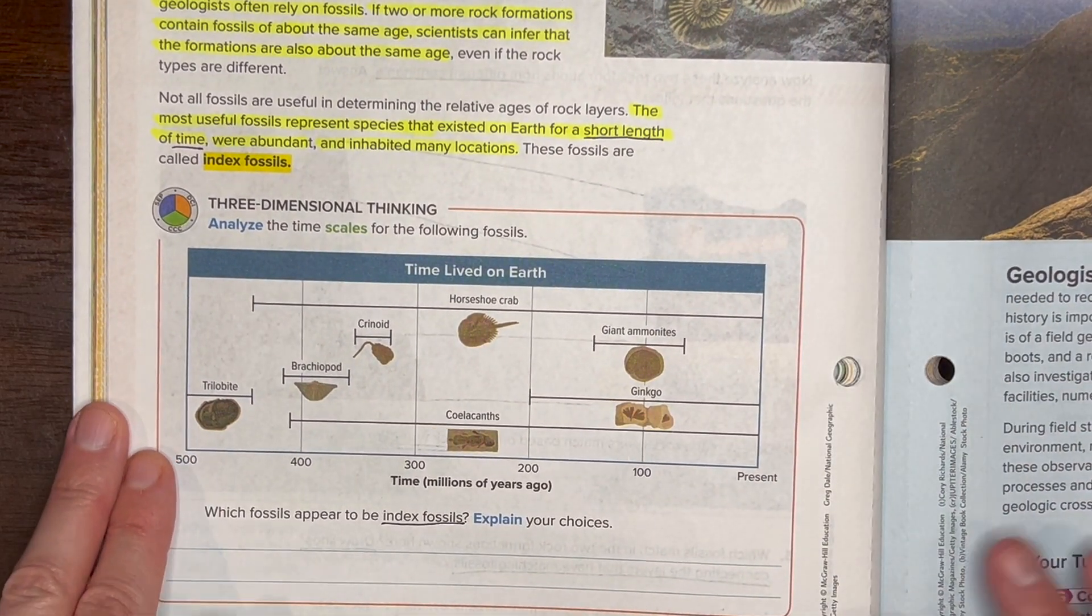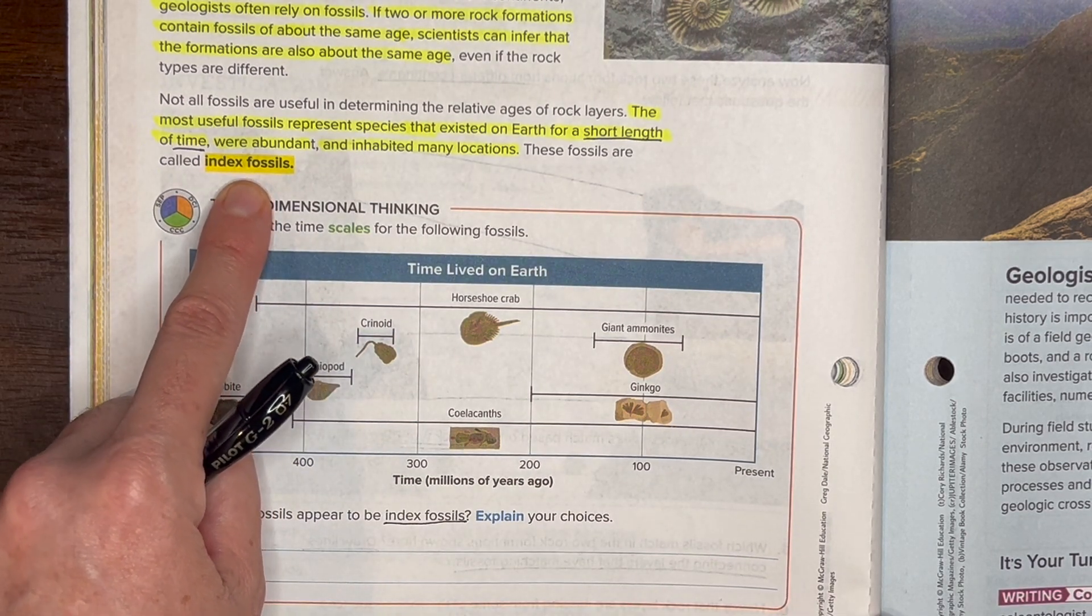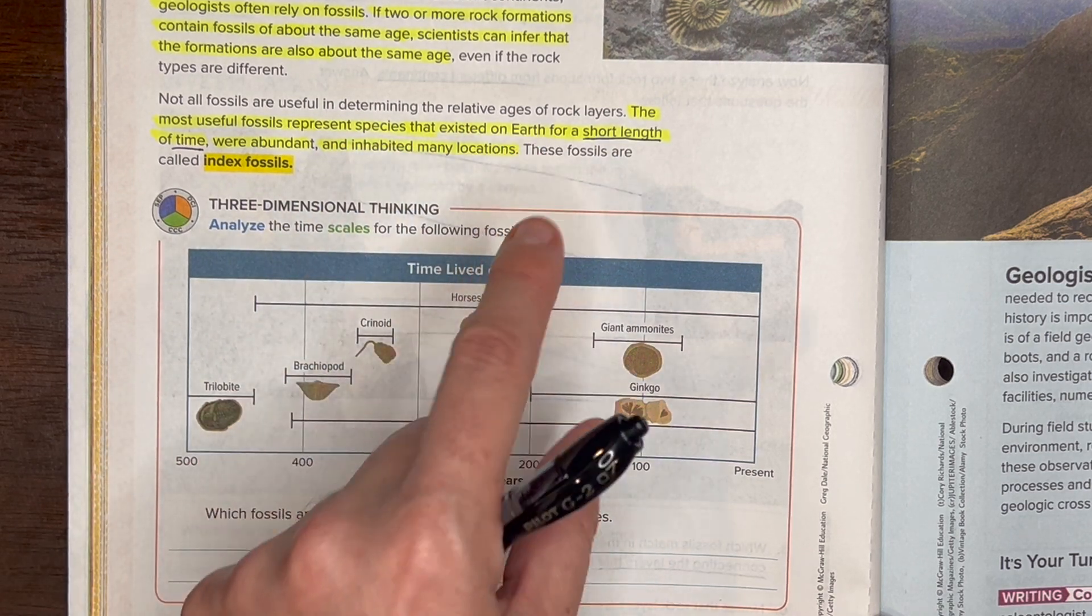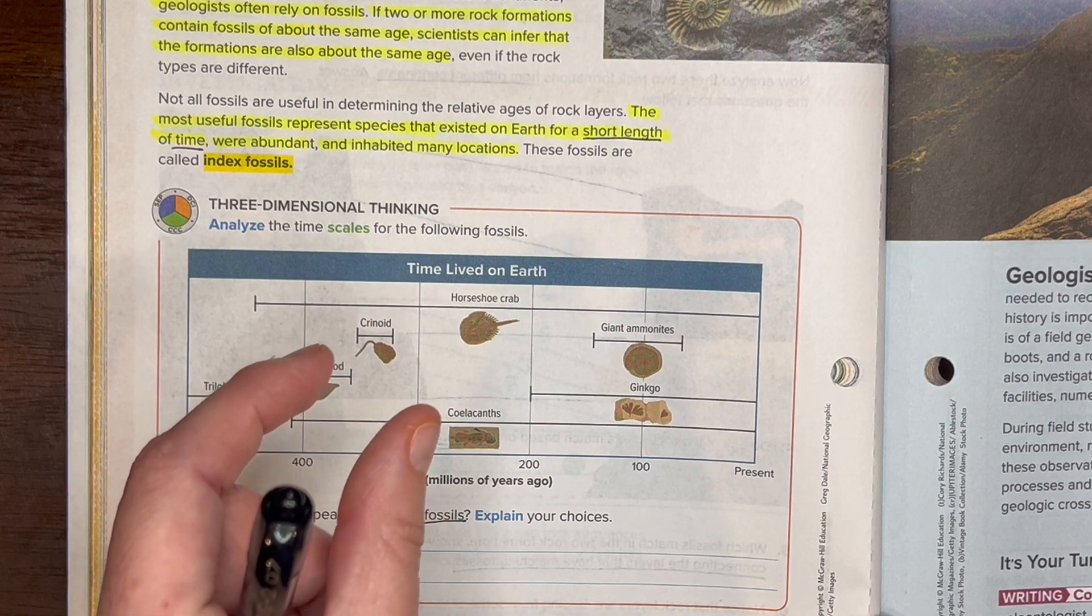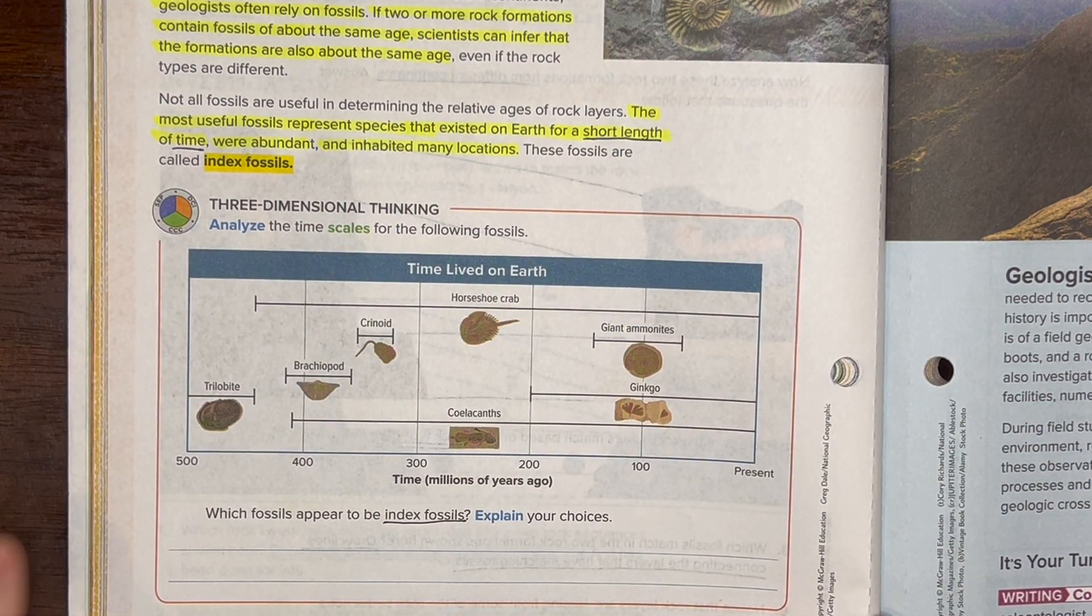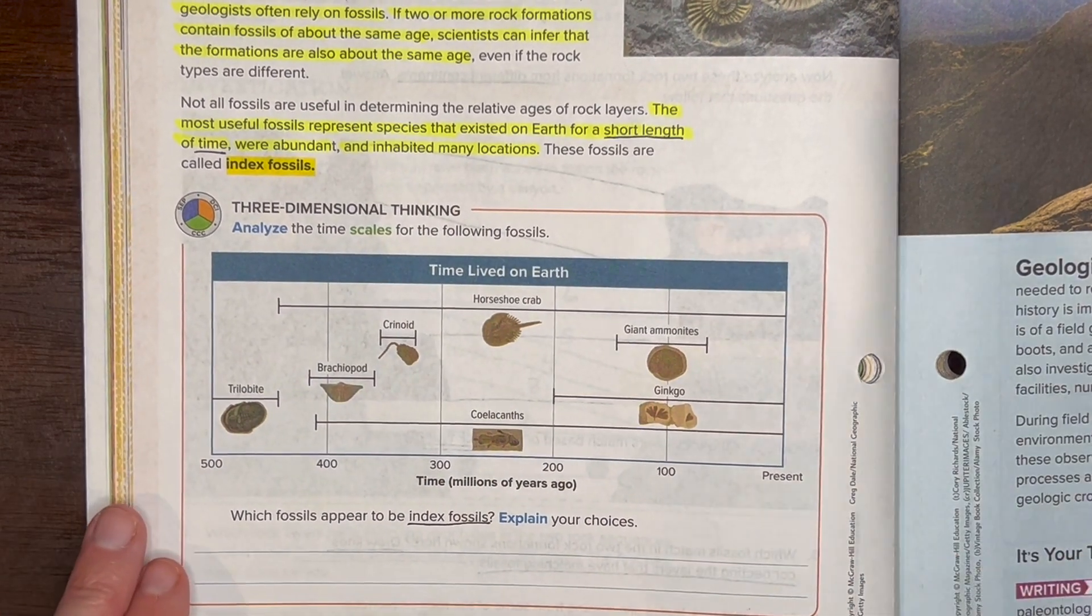There's some special kind of fossils that are very useful and they have a special name, they're called index fossils. So an index fossil is a type of fossil that represents a species that existed on Earth just for a short period of time, but they were everywhere, they were all over and they inhabited many locations.